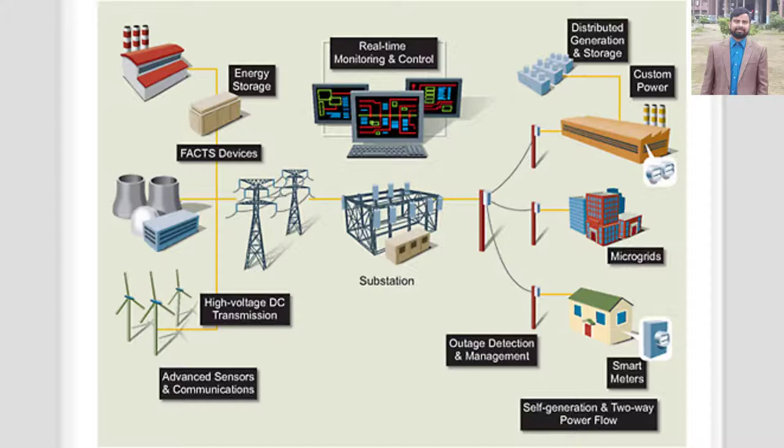Even so, centralized power stations are still very inefficient. About two-thirds of the energy that arrives at a power plant, in the form of raw fuel, is wasted in the plant itself and on the journey to your home.